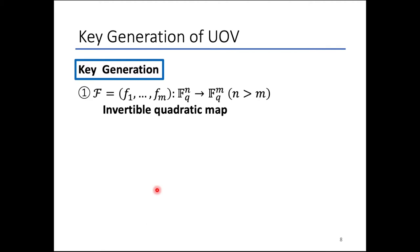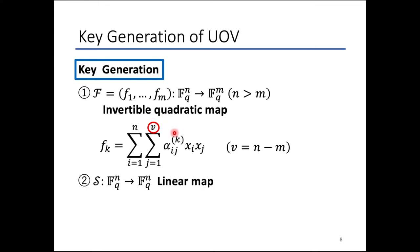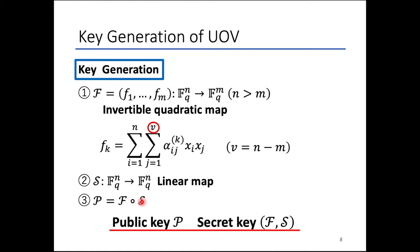We briefly explain the key generation step of UOV. First, we generate an easily invertible quadratic map F such that each polynomial Fk is designed so that at least one variable of each quadratic term is from x1 to xv, where V is set to be equal to N minus M. This map F is called the central map. Second, we randomly choose an invertible linear map S in order to hide the structure of F. Finally, the quadratic map P is given by composing F and S, and the public key is P and the secret key is F and S.